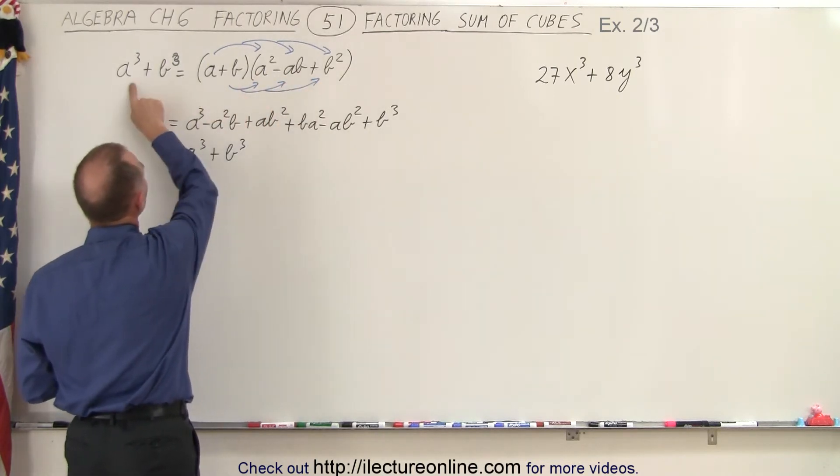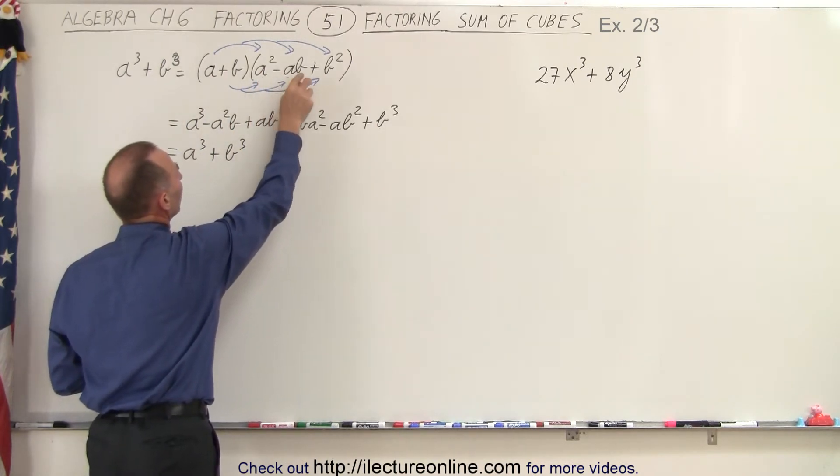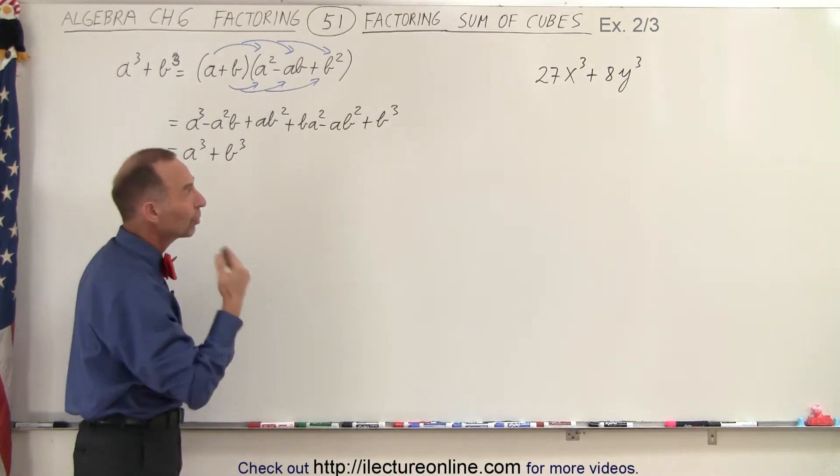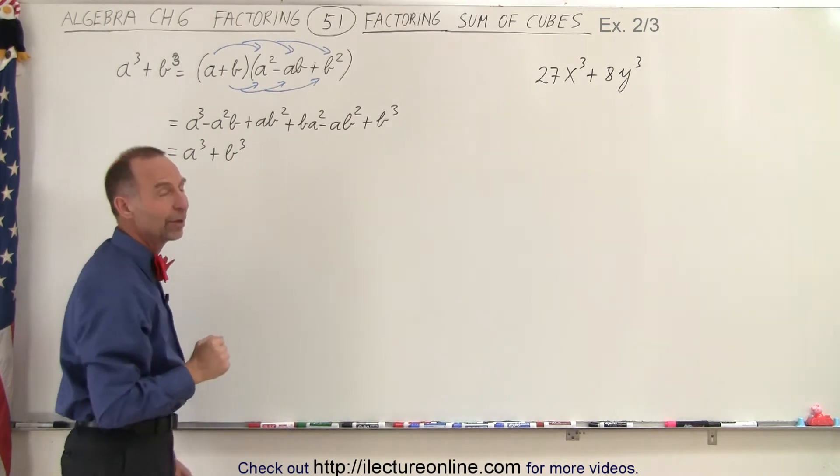So it's first a plus b, then we write the first term squared minus the product of the two plus the last term squared. We're going to apply the very same thing to our example, but it's a good idea to match up what a and b are equal to in our new example.